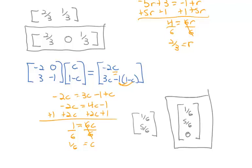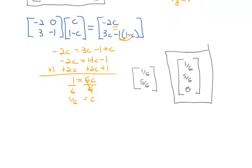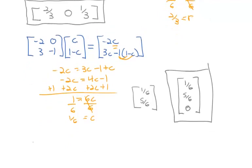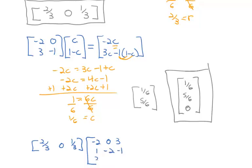So now we have the row strategy of 2/3, 0, 1/3 and the column strategy of 1/6, 5/6, 0. Let's find the value of the game by multiplying: row strategy (2/3, 0, 1/3) times the original game matrix (negative 2, 0, 3; 1, negative 2, negative 1; 3, negative 1, 1) times the column strategy (1/6, 5/6, 0).